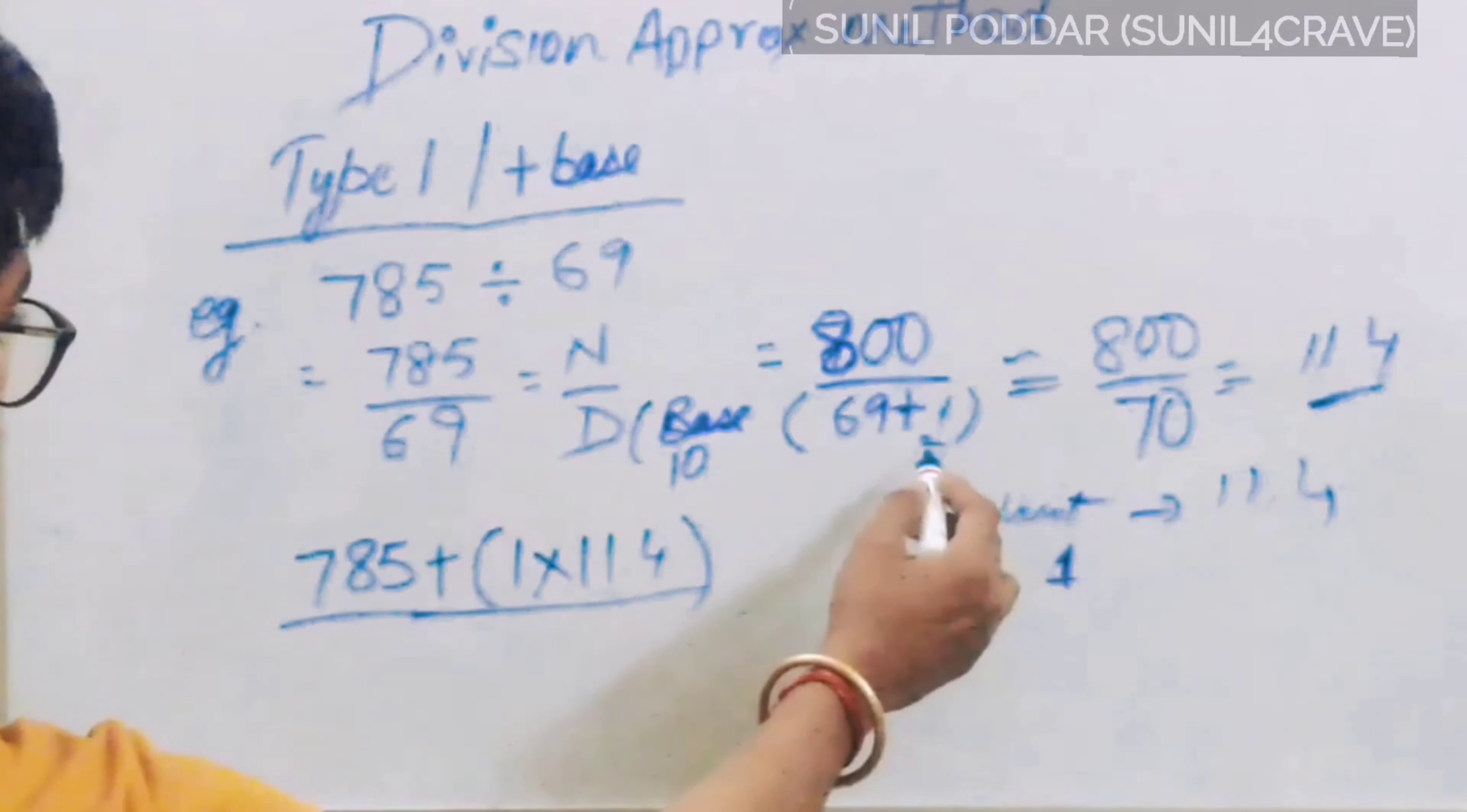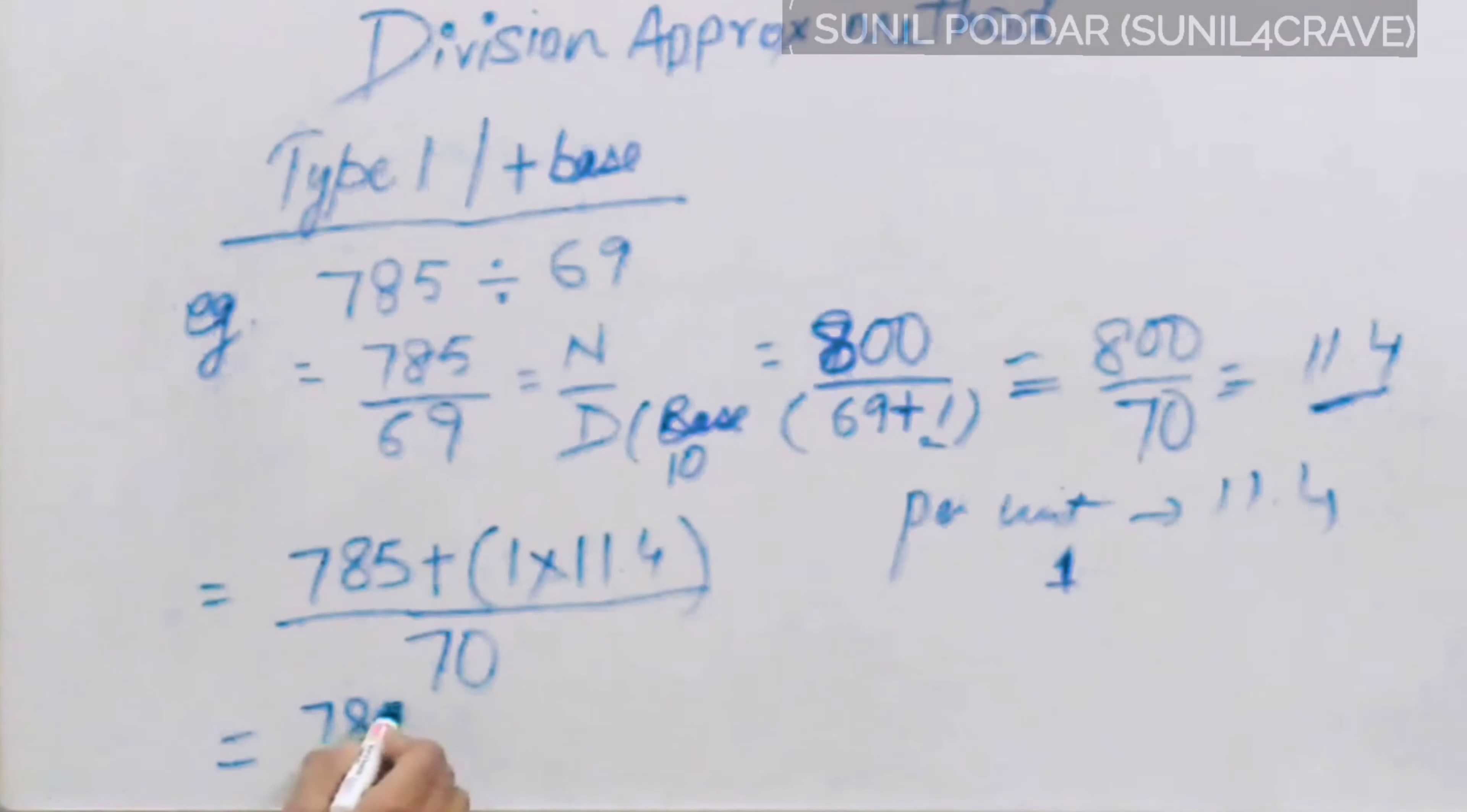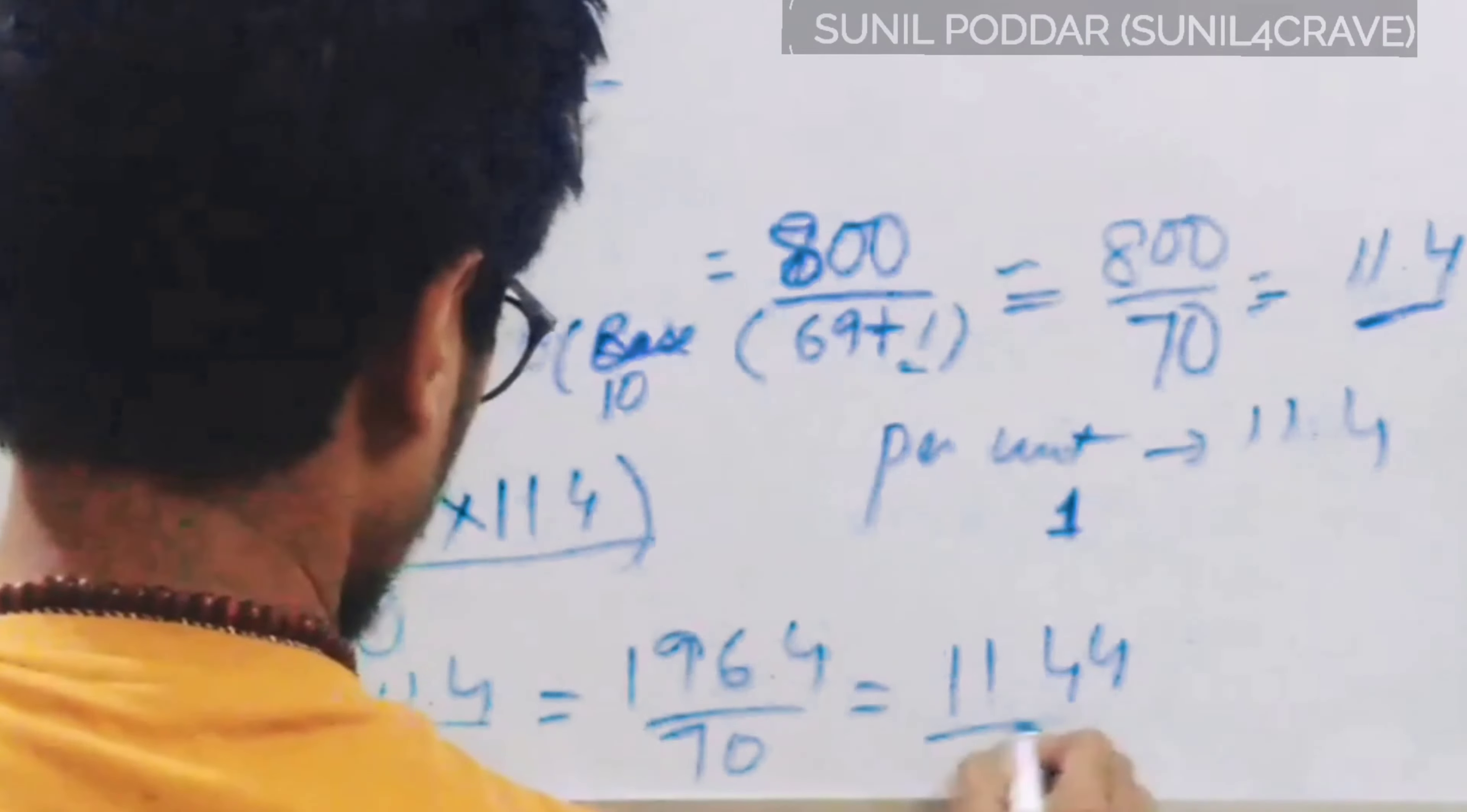So we will multiply 11.4 with the numerator, then we will divide with 70. As we already added this one plus 1, so means denominator we need to keep as a multiple of 10. 785 plus 11.4, answer will come out 796.4 divided by 70 is 11.44.